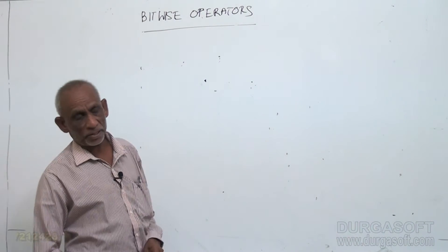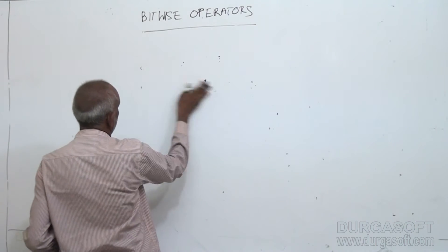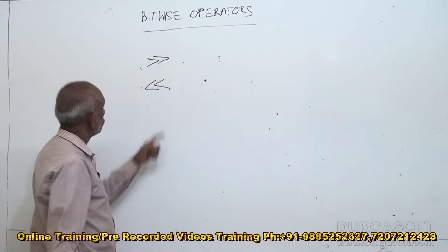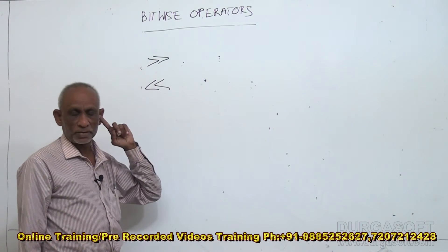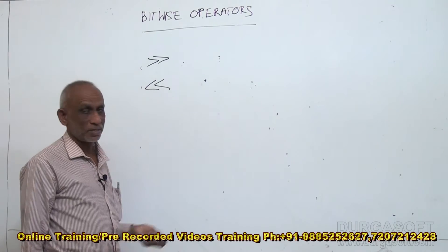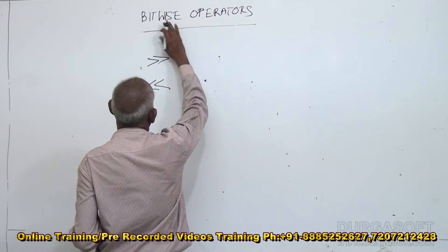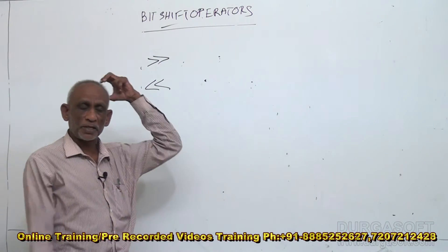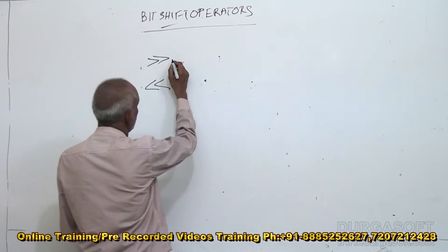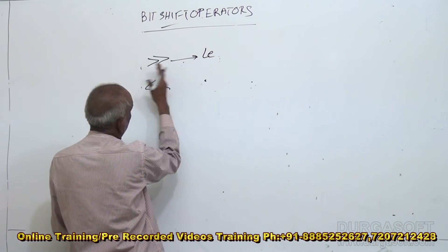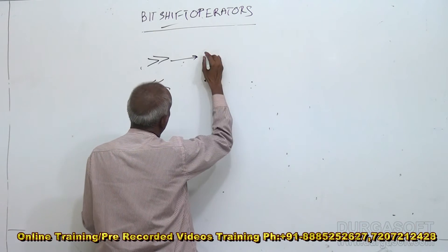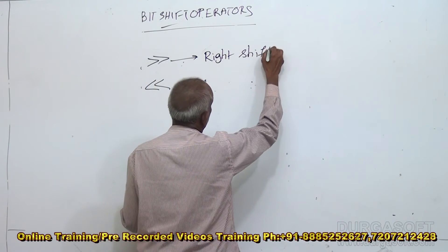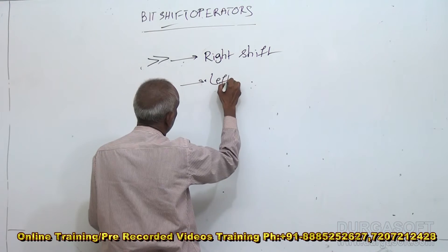There are two more bitwise operators: two greater-than signs (>>) and two less-than signs (<<). These are called bit shift operators. The >> is the right shift operator and << is the left shift operator.